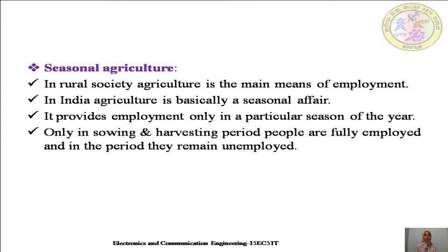Another important reason for unemployment is seasonal agriculture. In rural society, agriculture is the main means of employment — most rural people are engaged in agricultural work directly or indirectly. But in India, agriculture is basically a seasonal affair, providing employment only in particular seasons — that is, the sowing period and the harvesting period. In the period between post-harvesting and next sowing, people remain unemployed, which adversely affects their standard of living. Also, since agriculture in India mainly depends on rainfall, it creates unemployment in the summer season.